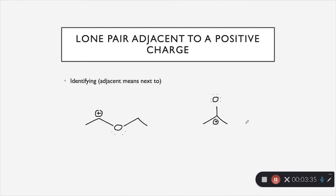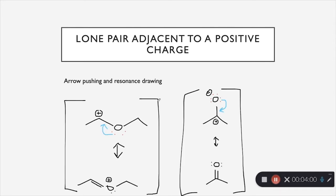The next pattern is a lone pair adjacent to a positive charge. Adjacent means one atom away from the lone pair. You can see here you have a positive charge that is one atom away from the lone pair. Your oxygen has the lone pair and then one carbon away you have a positive charge. In this case, you're always going to move the arrow from that lone pair towards the positive charge, because the positive charge is like a hole that you want to fill. This pattern has one arrow, as you can see in the example.